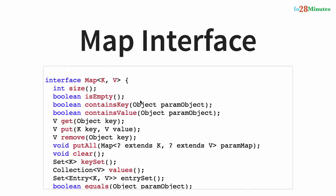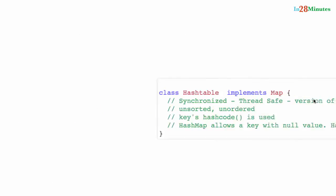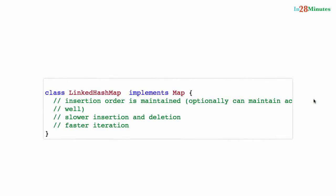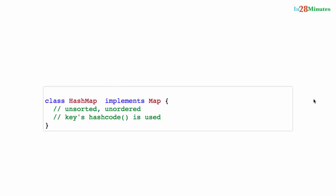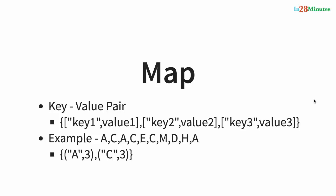There are four important implementations of the map interface: HashMap, HashTable, LinkedHashMap, and TreeMap. In this step we were introduced to the concept of a map — nothing but a set of key-value pairs. The map interface provides a wide variety of methods: you can get all keys, all values, iterate over keys to get values, insert with a key-value pair, or get values by key.